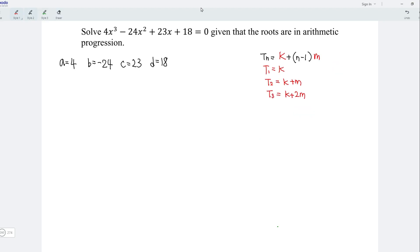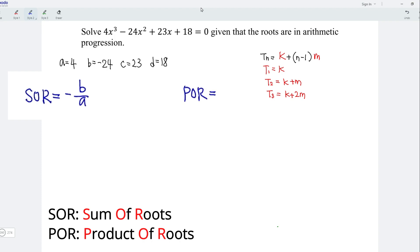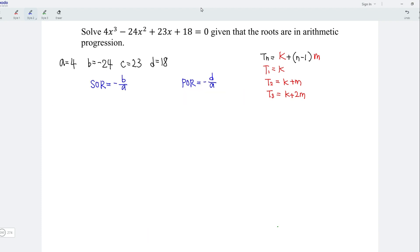Now let's solve for the equation. Recall that for any cubic equation, the sum of roots is equal to negative B over A, while the product of roots is equal to negative D over A.